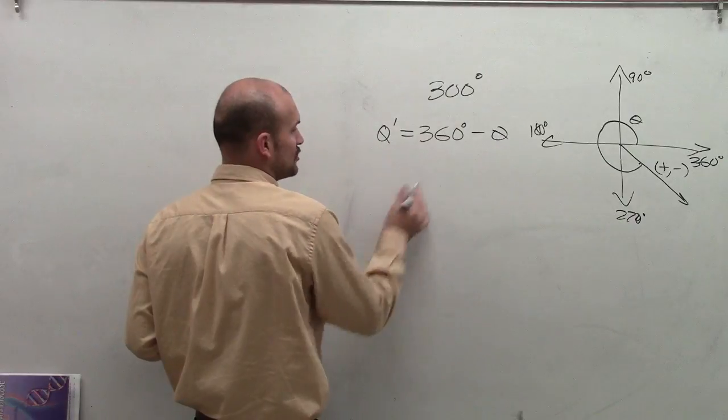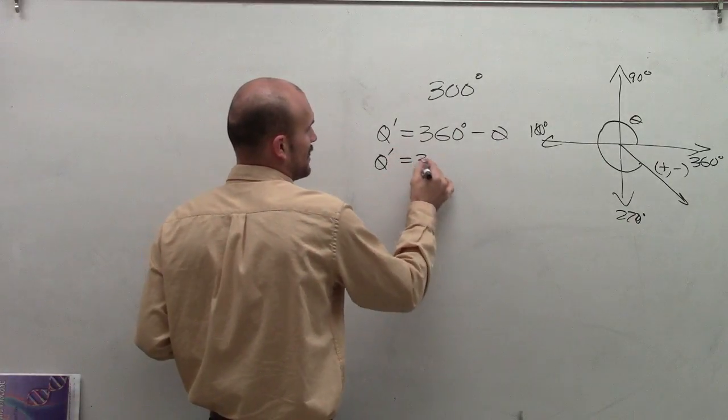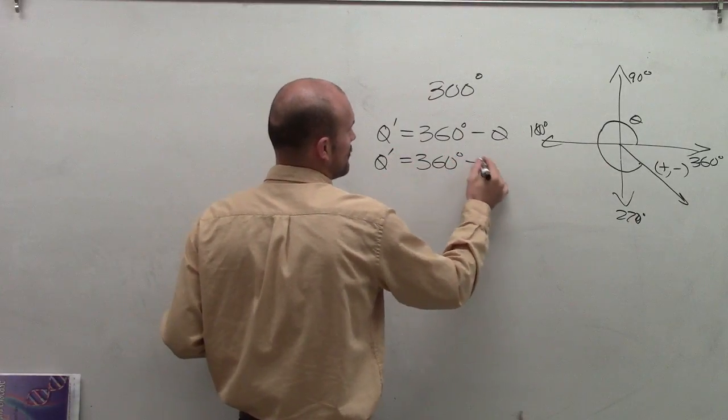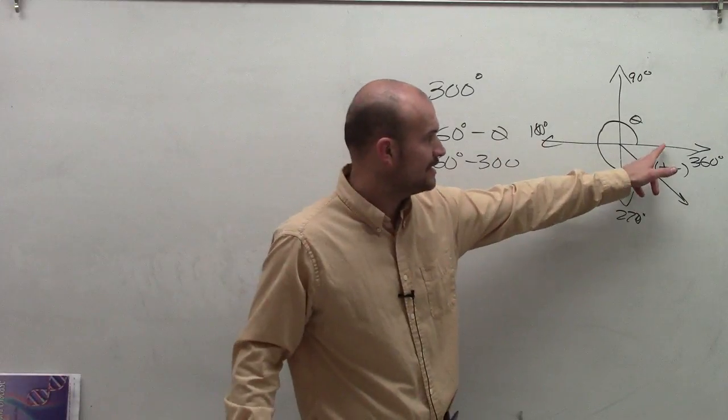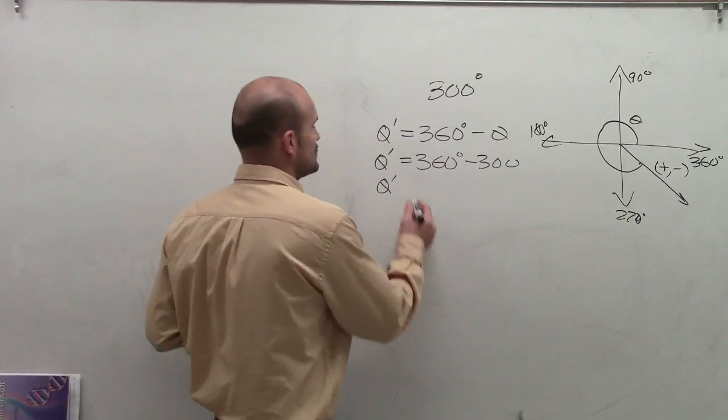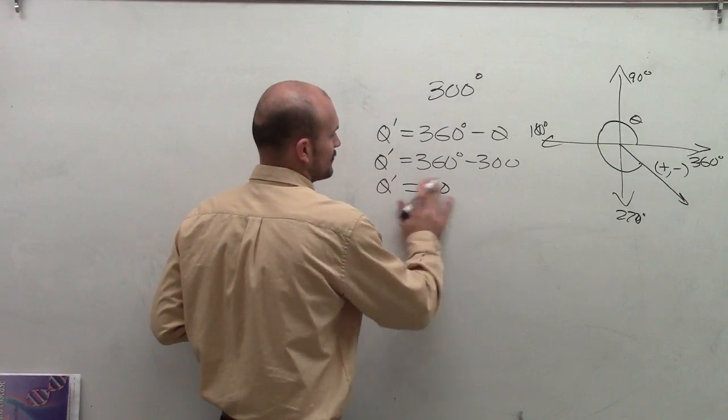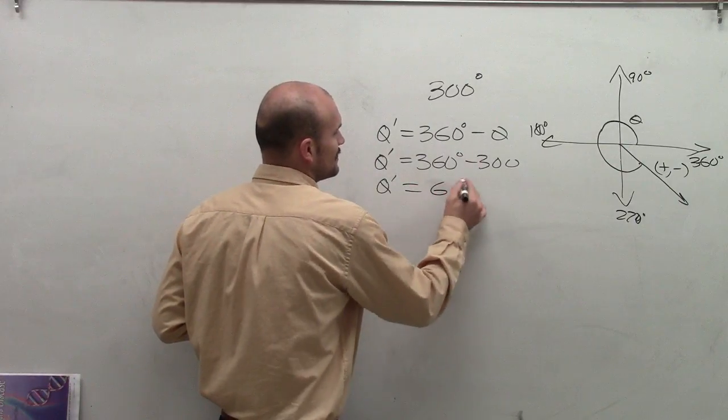Well, theta in this case is going to be 300 degrees. So therefore, I have 360 degrees minus 300, where my reference angle, the acute angle for my terminal side to my horizontal axis is going to give me 60 degrees.